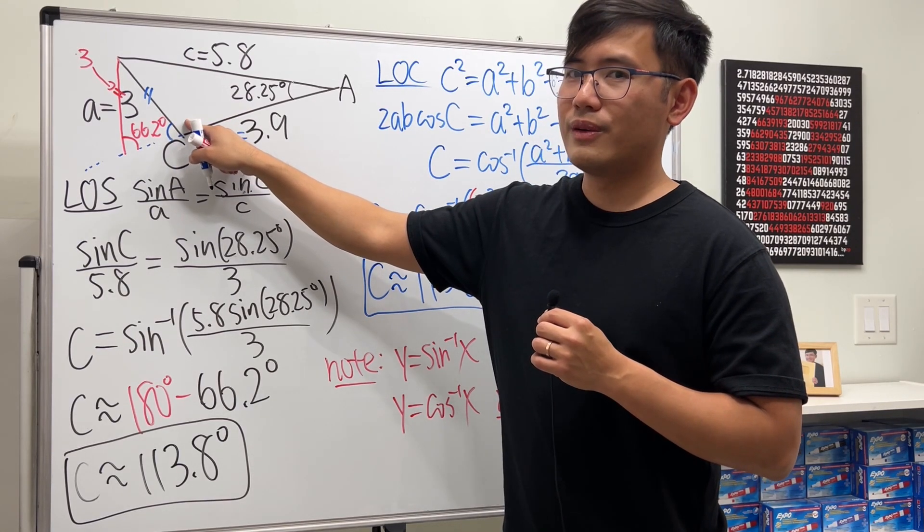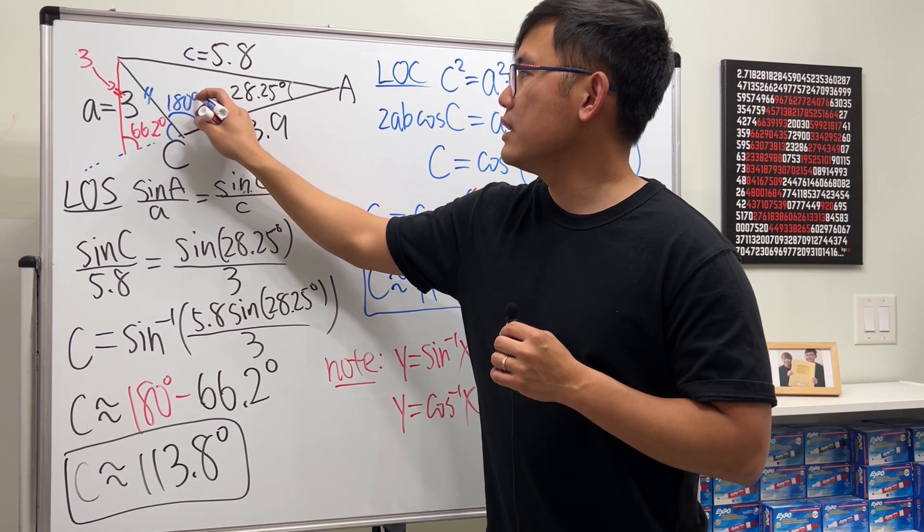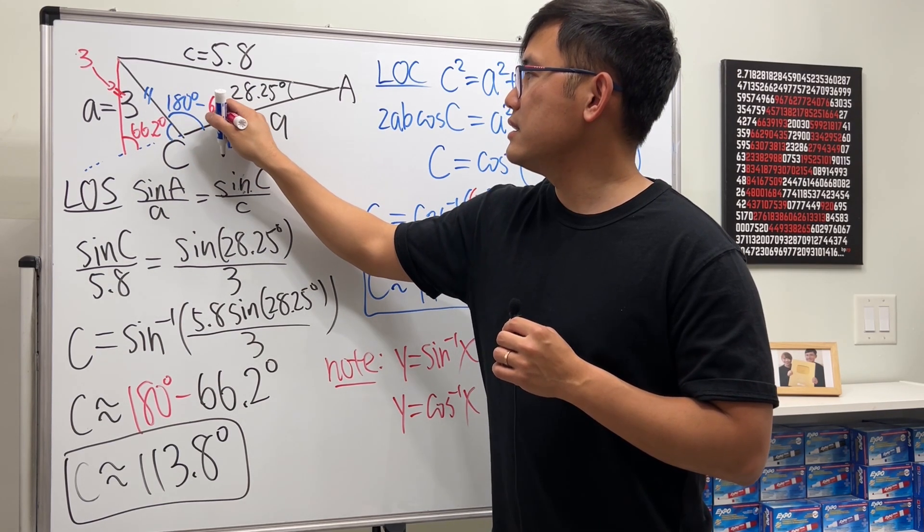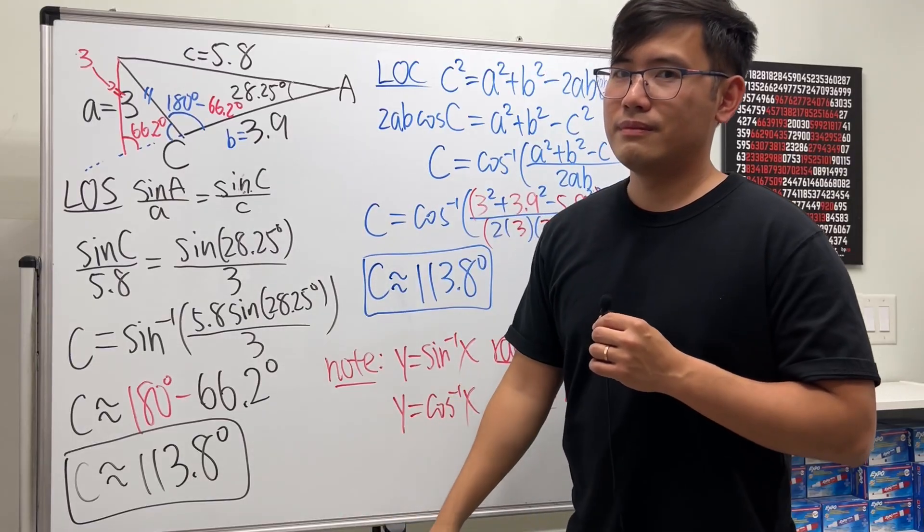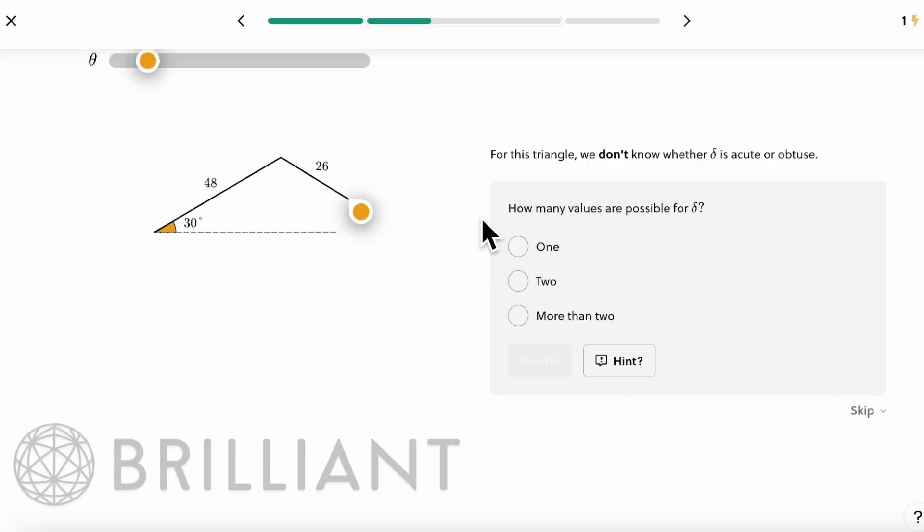Now, how do we figure out this angle? This angle will just be 180 degrees minus 66.2 degrees, isn't it? Yes, if you do that, you'll end up with the correct answer. Hey everyone, I'm excited to tell you about Brilliant.org, our sponsor for today's video.